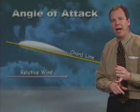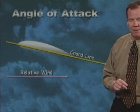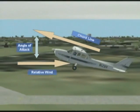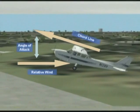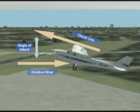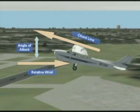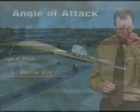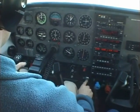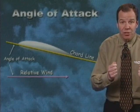Our next term is the angle of attack. The angle of attack is the angle measured between the chord line and the relative wind. In the cockpit, the pilot can control the angle of attack by manipulating the flight controls. Changing the angle of attack changes the airplane's lift, airspeed, and drag.